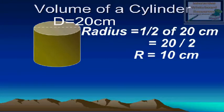Radius equals one half of 20 centimeters, which equals 20 divided by 2. R equals 10 centimeters.